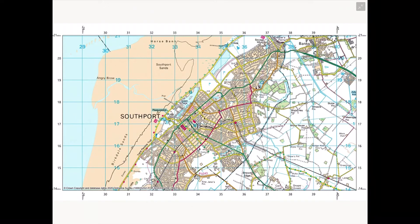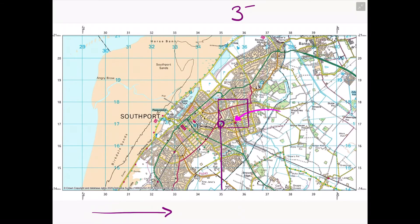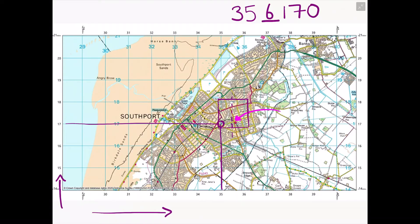We're going to increase the challenge now and do this on an actual OS map. This is an OS map of Southport, and I'm going to locate this train station — this pinkish dot — using a six-figure grid reference. I locate the grid square the train station is in, find the bottom-left-hand corner, go along the corridor, then divide the grid square in half and estimate — I estimate six because it's over halfway. Going up the stairs and finding the line, I don't need any steps up because the station is right on that grid square line. The answer is 356170.